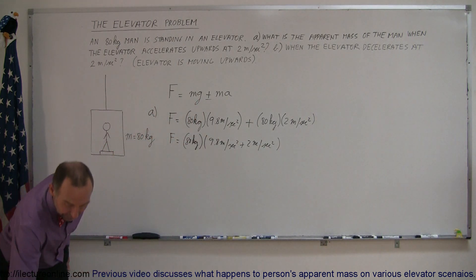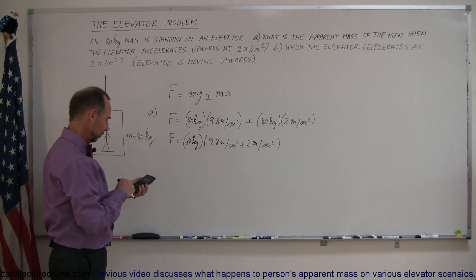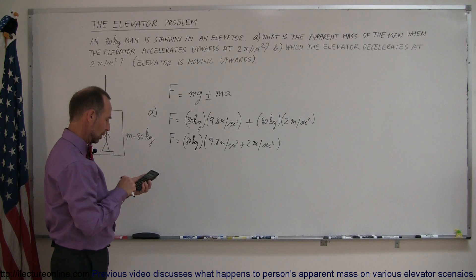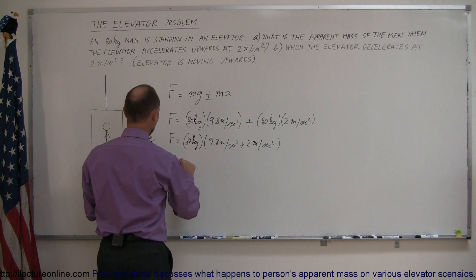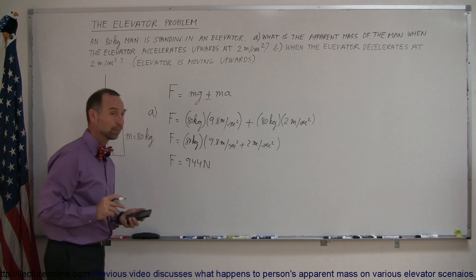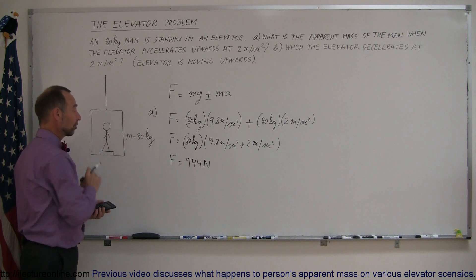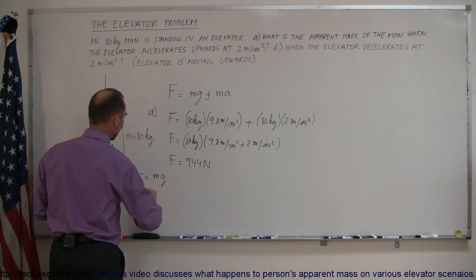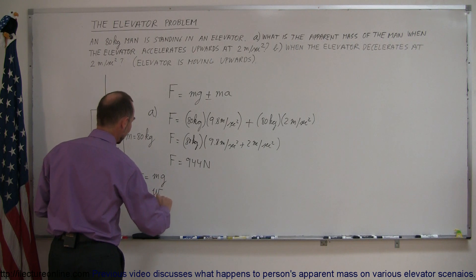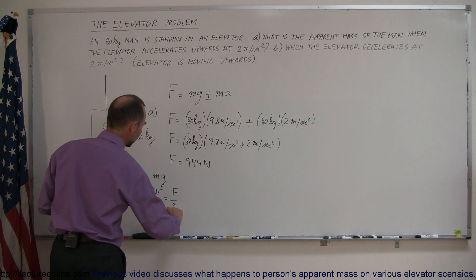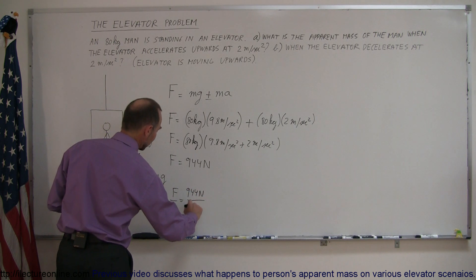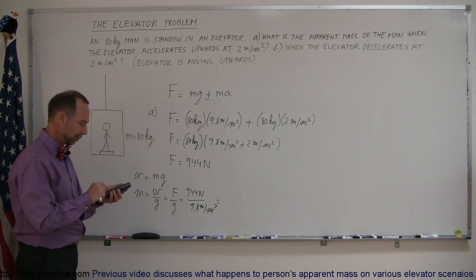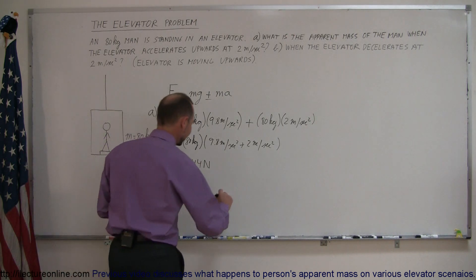So the total force is equal to 80 kilograms times the quantity 9.8 plus 2 meters per second squared, factoring out the 80 kilograms. With a calculator, that gives us 80 times 11.8, which equals 944 newtons. The apparent mass is then found since weight equals mg, so mass equals force divided by g: 944 newtons divided by 9.8 meters per second squared gives 96 kilograms.